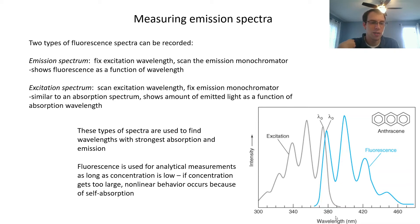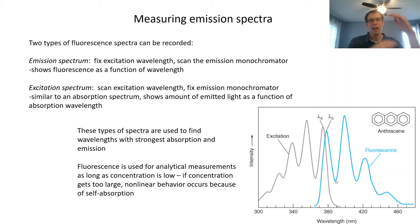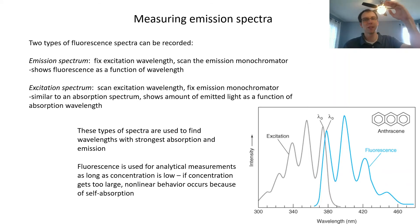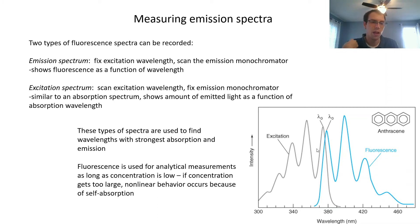We see here that this sort of maps onto — the excitation happens at a higher energy, smaller wavelength, and the fluorescence happens at a lower energy. It's because of that gap between where the molecule absorbs light and then relaxes, losing some of that energy as heat. So we can see these sort of mirror each other, though they're not exactly the same.